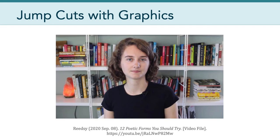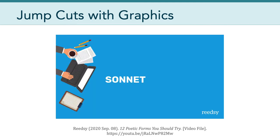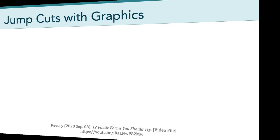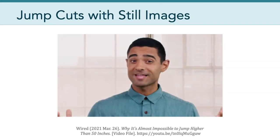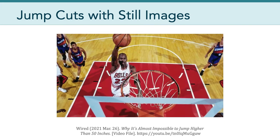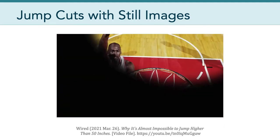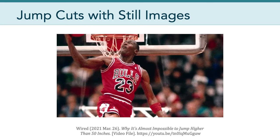Another approach is to jump cut with graphics. Here's an example where the host is introducing the topic of sonnets and suddenly the video cuts to a relevant graphic — a cue to the viewer that the video is entering a new topic or chapter. Oftentimes jump cuts will show the viewer relevant still images. Here's an example from Wired Magazine: notice how the video cuts from the talking head to still images of Michael Jordan. You might think a dunk legend like Michael Jordan would own the vertical leap record. Of course these still images are animated to keep the visuals interesting and the pace moving forward, and this type of cut is made possible by using static images.